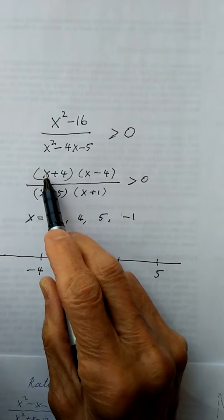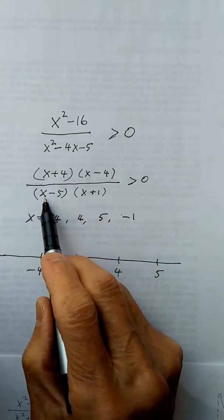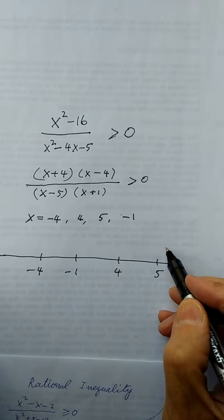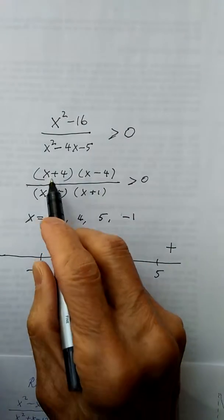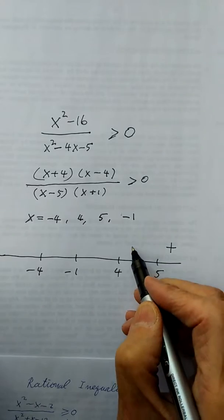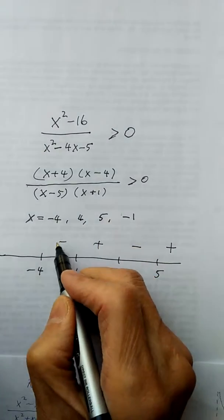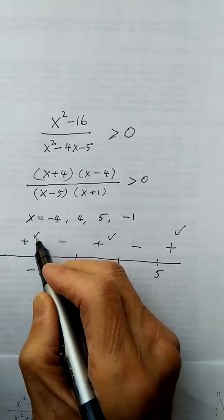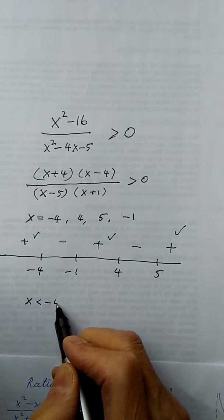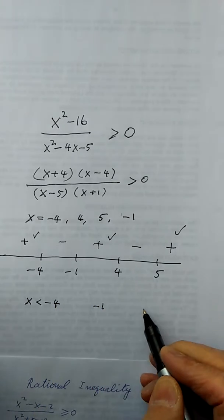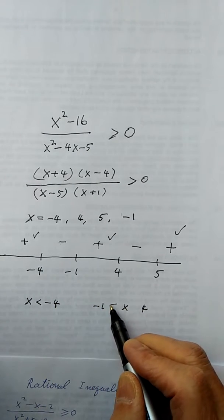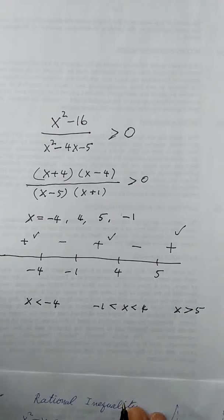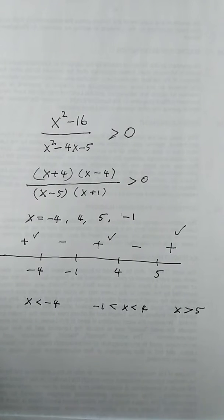Multiplying out, the numerator has a positive x squared and the denominator also has a positive x squared, so everything starts positive. There is no order-2 factor, so just alternate signs: plus, minus, plus, minus, plus. I want plus, so the answer is: x less than negative 4, between negative 1 and 4, and x greater than 5. The answer is very quick.